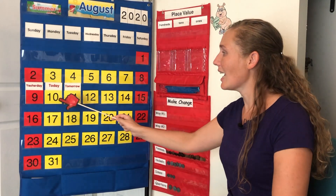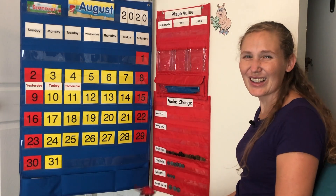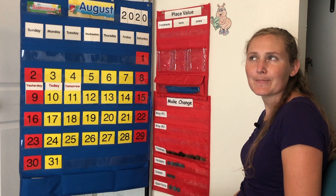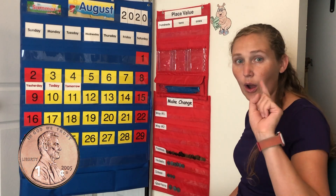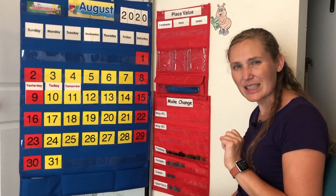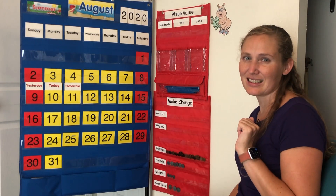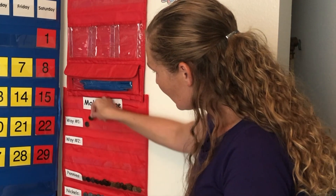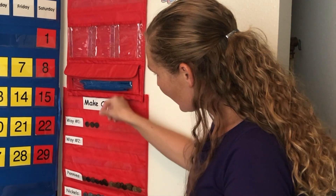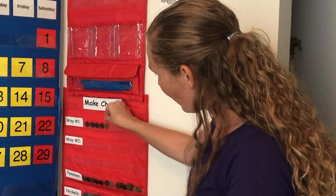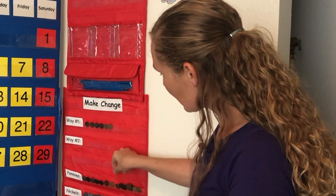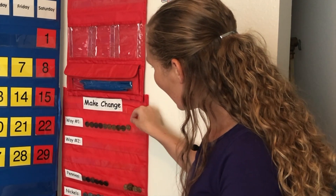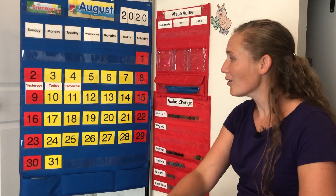Now, we're going to make 10 with money. Are you ready to make change with me? How can we make 10 with money? Well, our penny is worth 1 cent. So how many pennies would it take to make 10 cents? 10 pennies! Let's count them out: 1, 2, 3, 4, 5, 6, 7, 8, 9, 10. 10 pennies make our number 10!